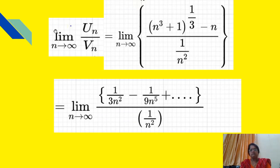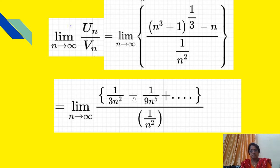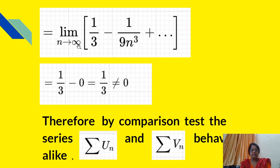We find the limit as n tends to infinity of un/vn = limit of [(n³+1)^(1/3) − n] / (1/n²). From our expansion, this equals limit of [1/(3n²) − 1/(9n⁵) + ...] / (1/n²) = limit of [1/3 − 1/(9n³) + ...]. When n tends to infinity, the remaining terms tend to 0, giving 1/3, which is not equal to 0.